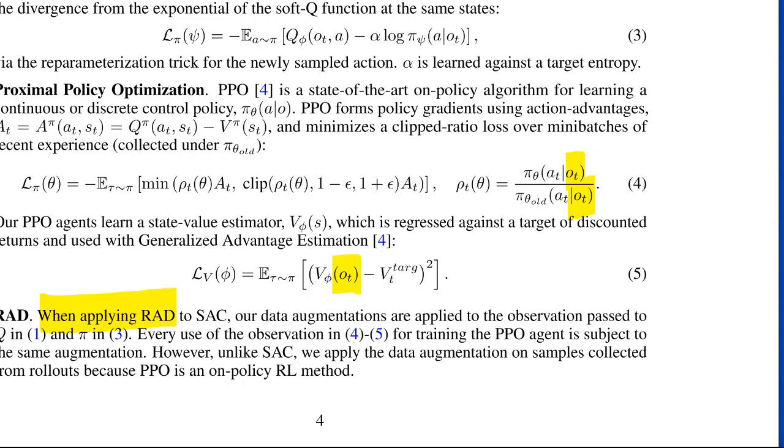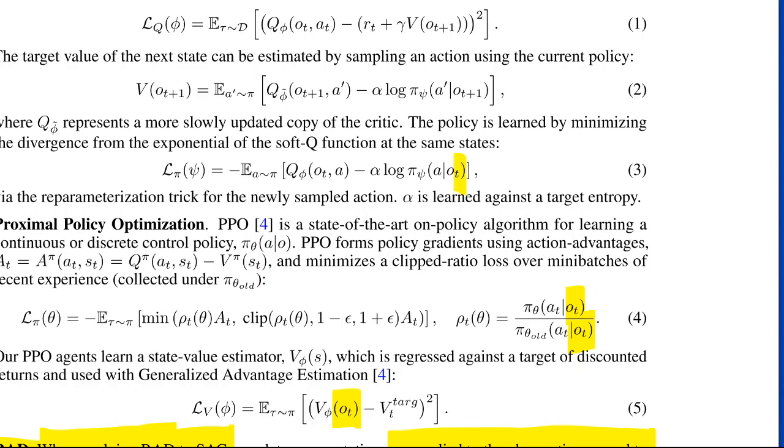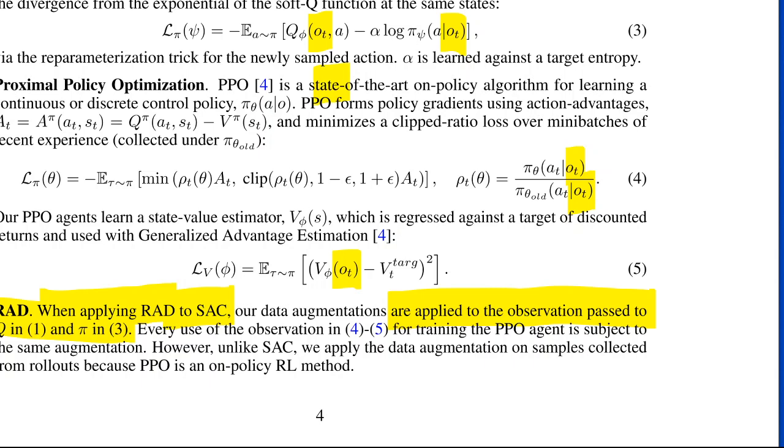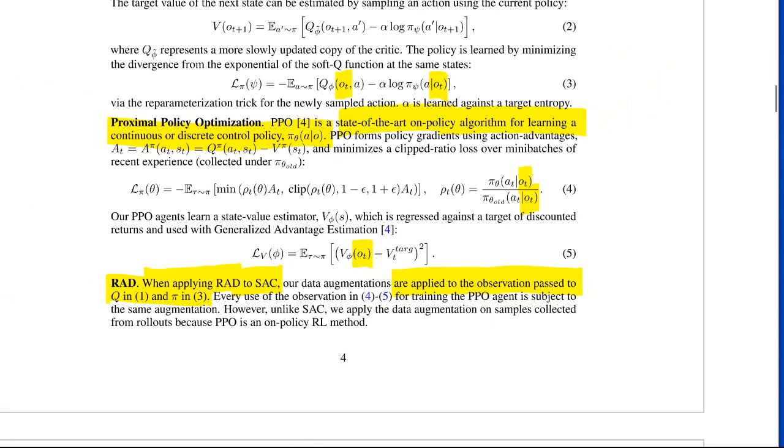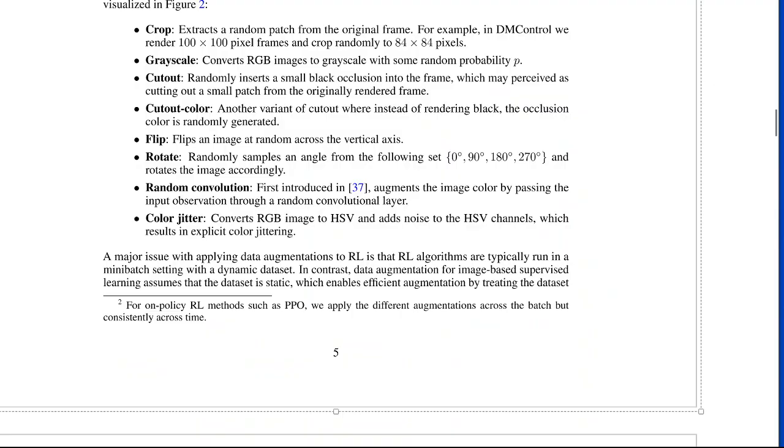To SAC, which is soft actor critic, our data augmentations are applied to the observation past the Q and pi. This is soft actor critic, which is a state of the art off-policy algorithm for continuous control problems. And you have to pay attention that when you feed the observations, they're the same observations. And then proximal policy optimization is a state of the art on-policy algorithm for learning a continuous or discrete control policy.